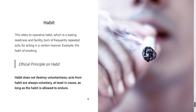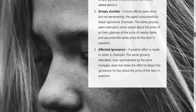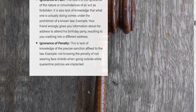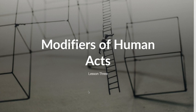So these are the five modifiers of human acts: ignorance, concupiscence, fear, violence, and habit. The principles we have discussed enable us to understand how these modifiers affect the moral character of human acts.